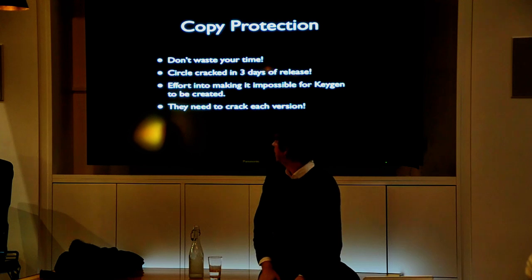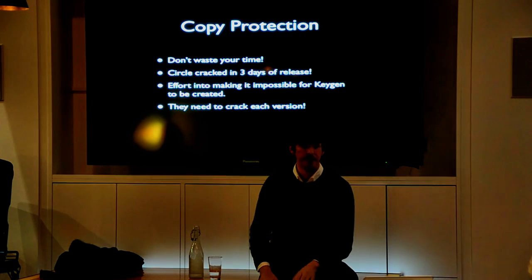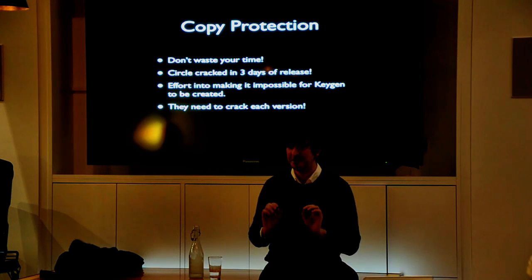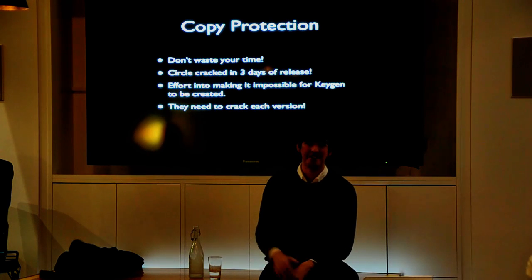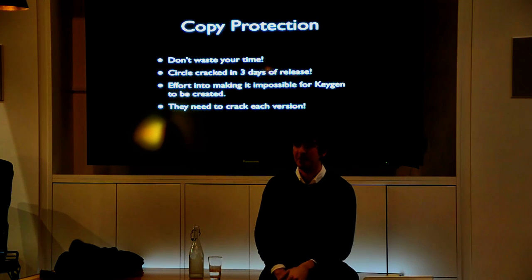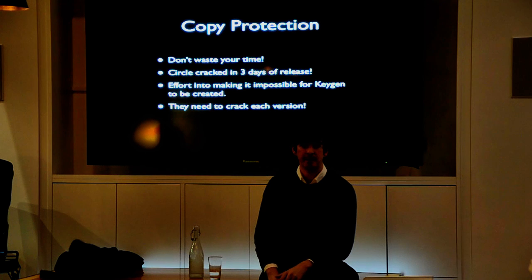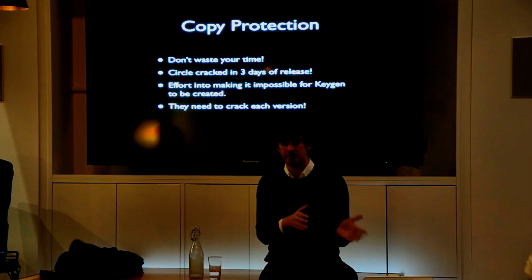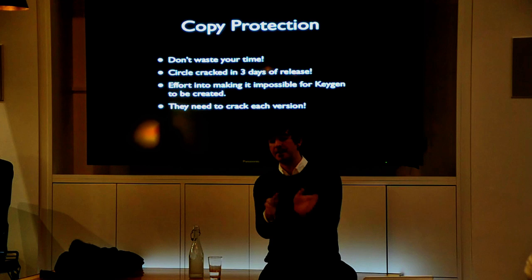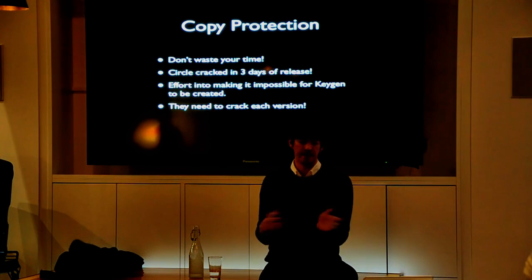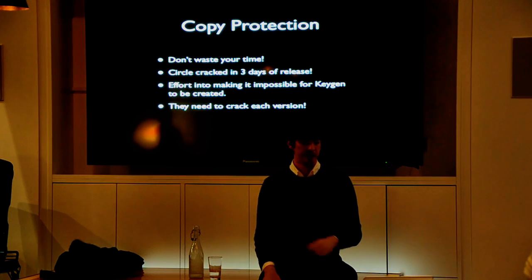The last thing was copy protection. My advice: don't waste your time. Circle was cracked within three days of release — you could Google and find it cracked. The most important thing is that people cannot create a keygen — a key generator that produces serial codes automatically. If they can do that, they can create a license code for every version of your software regardless of updates, so you need to make a keygen impossible.